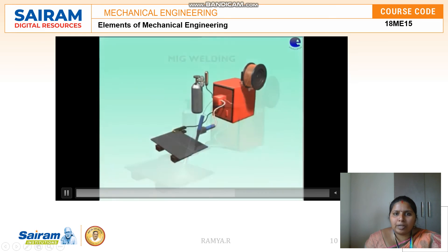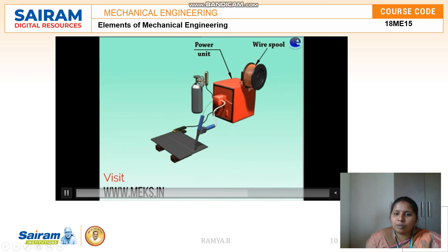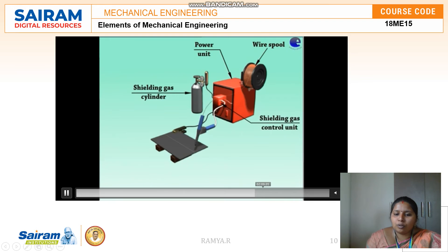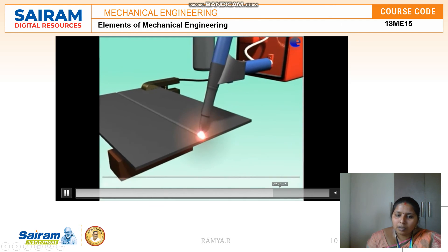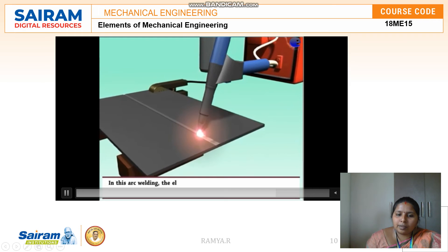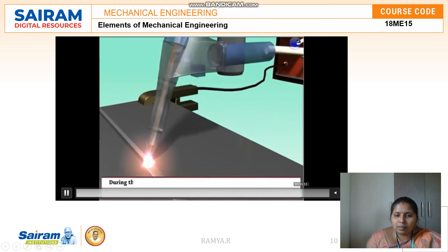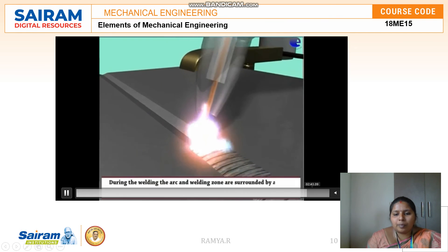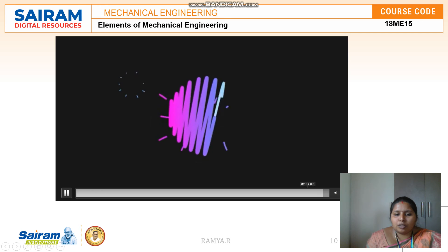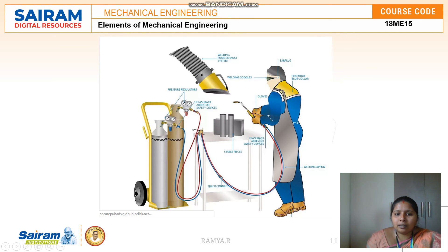In the MIG welding demonstration, a consumable electrode is used so no separate filler rod is needed. The arrangement is similar to TIG except for the wire spool from which the electrode is continuously fed inside the electrode holder. A gaseous shield prevents oxidation at the surface of the work piece. Since it is a consumable electrode, no separate filler rod is required.